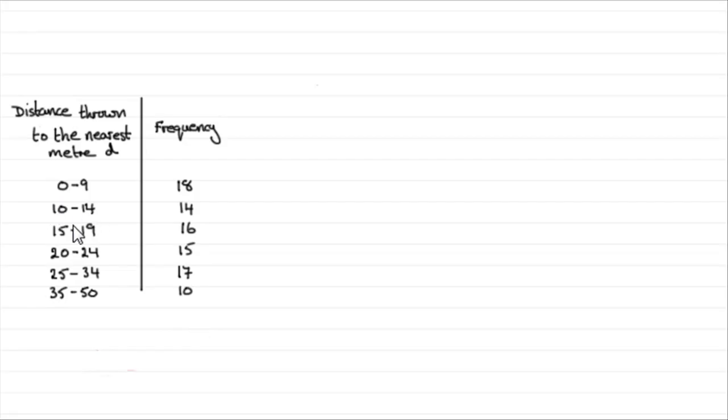We've got what we call here the classes, and it's very important that we understand what the classes represent. For instance, take this class here, 10 to 14. You'll notice that there's gaps and we're meant to be dealing with continuous data here. If it's measured to the nearest meter, it means that distance d has to be greater than or equal to the lower bound, but less than the upper bound.